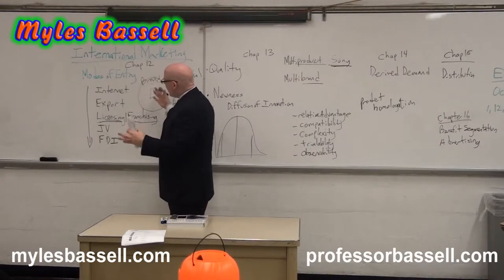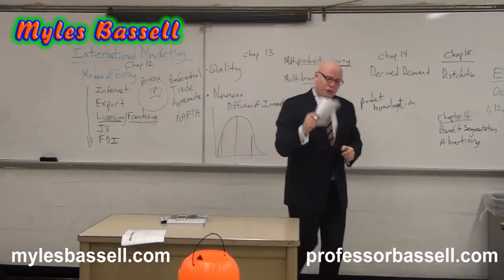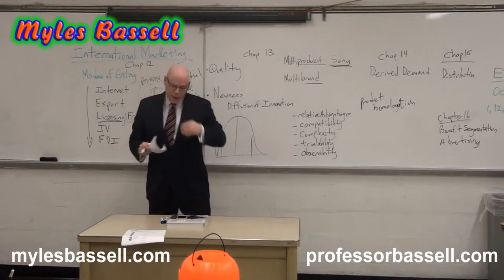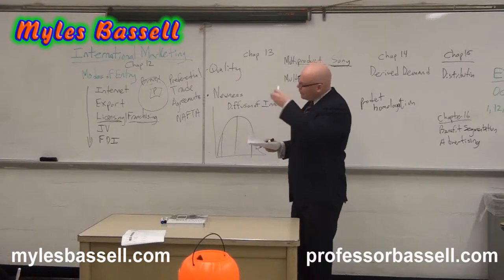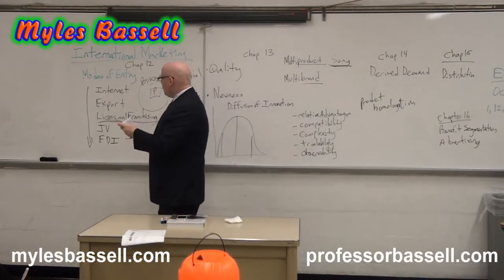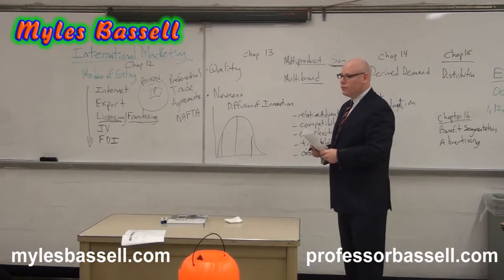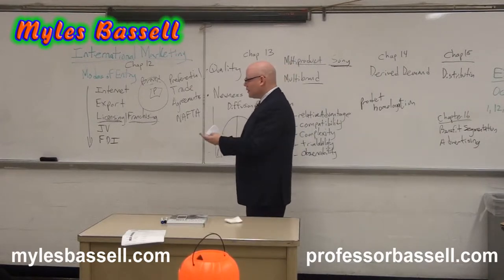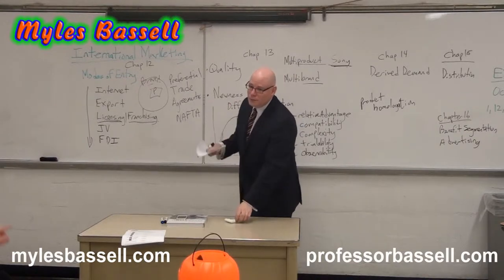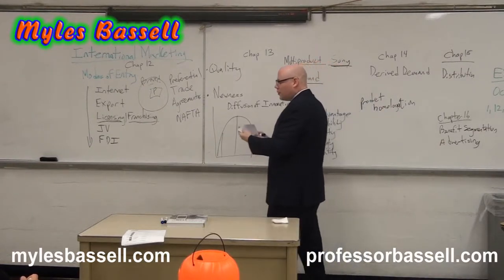These are different modes of entry, and at each level we're increasing the level of risk. The next is joint venture — at the JV level, we're increasing our level of investment, so the financial risk is greater. Why would we consider a joint venture as a mode of entry? To share some of the financial risk of pursuing a market opportunity — so you're not alone. If things go bad, it's not just you.